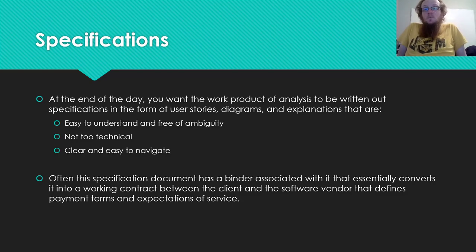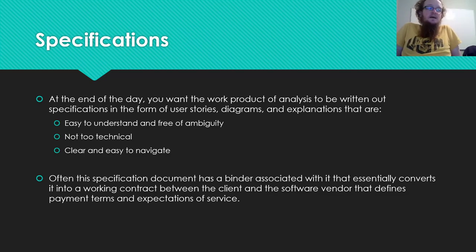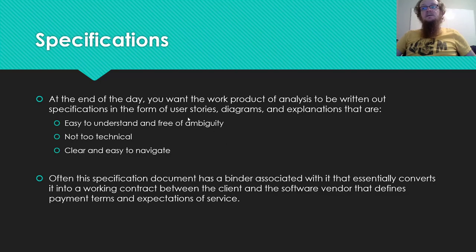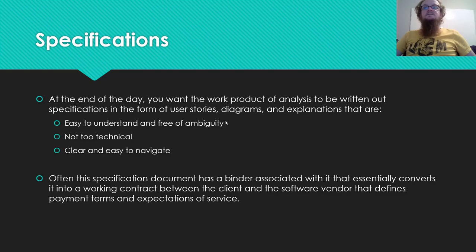These specifications are so important because they ultimately become a binding contract between the client who expects services and the software vendor expected to provide them. If you have ambiguity in a contractual obligation, the client can always come back and say you didn't live up to your end of the bargain. It's in everyone's best interest to minimize ambiguity so that when you reach this binding agreement process, everyone is more comfortable and risk from misunderstandings is covered.